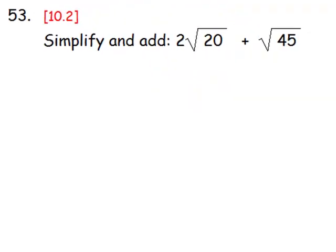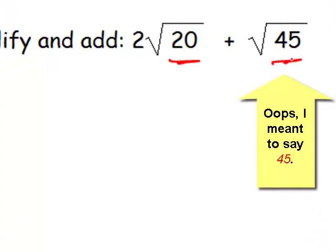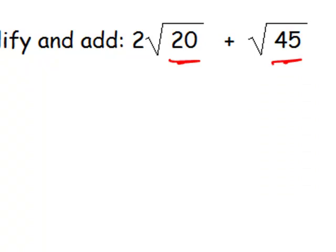Number 53. It would be very tempting to simply add the radicands 20 and 25, very tempting to do that. But radicals, as I say in my book, are not compatible with addition.